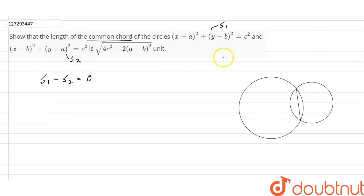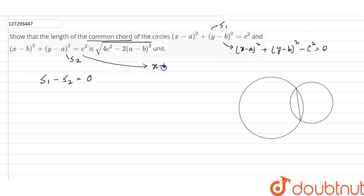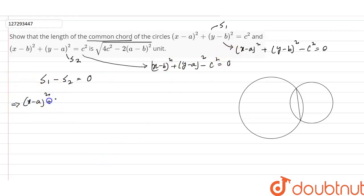So, we set up the equations. S1 is: (x-a)² + (y-b)² - c² = 0. And S2 is: (x-b)² + (y-a)² - c² = 0.